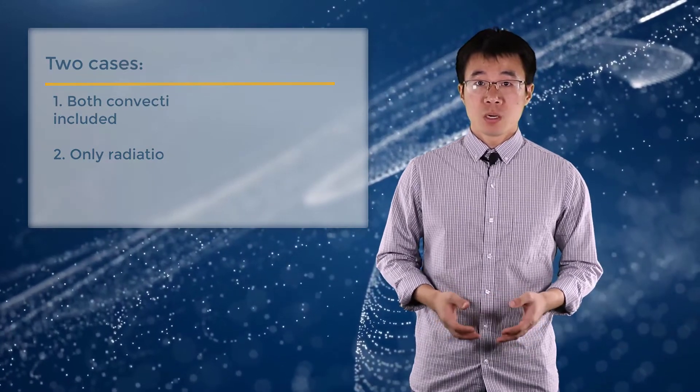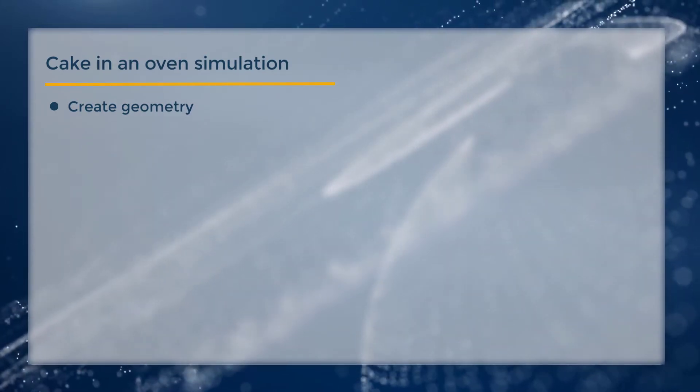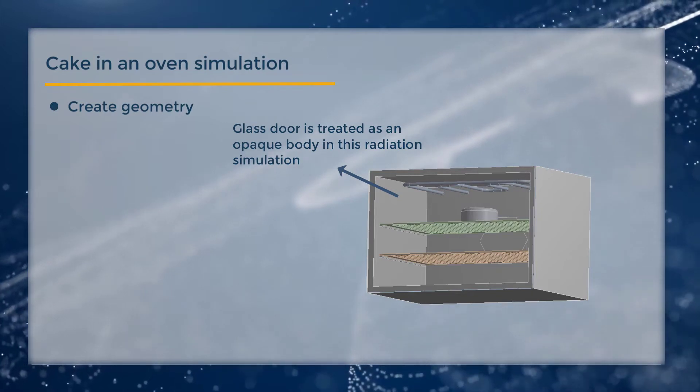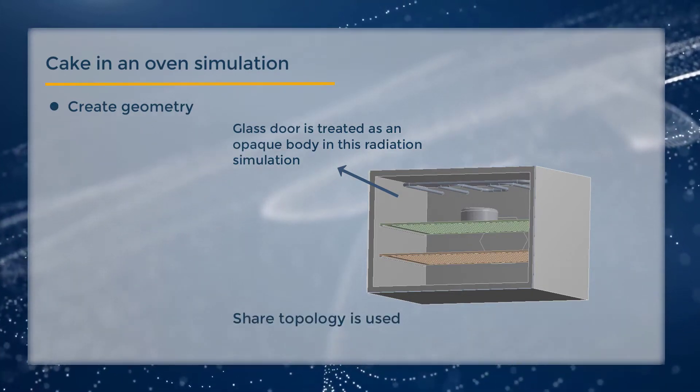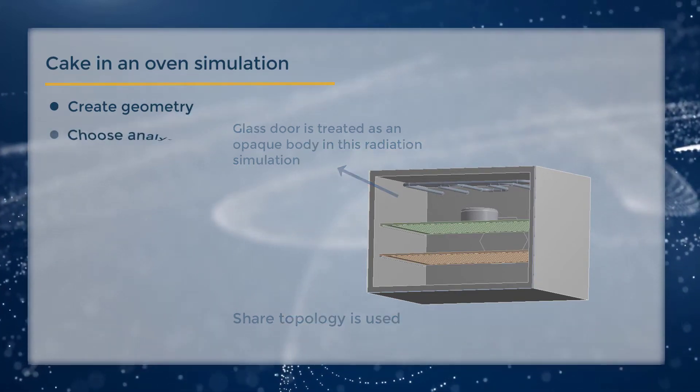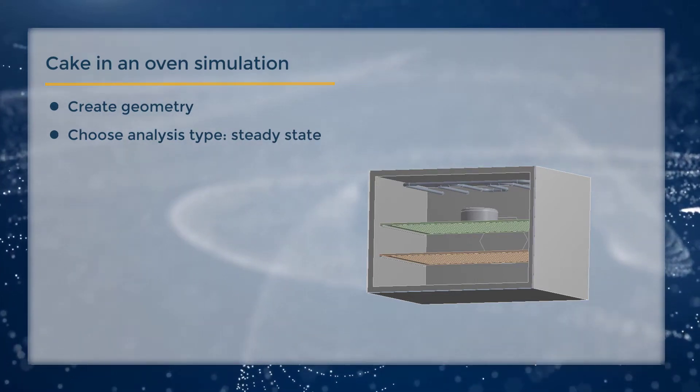In the first step, we created the geometry of an oven and a cake. The oven consists of a glass door, but we're treating the glass door as an opaque body from the standpoint of radiation. These parts have shared topology, which means they share nodes at common phases or edges, and no thermal contact is needed. A steady-state thermal analysis is used to see the temperature distribution after a long period of time.